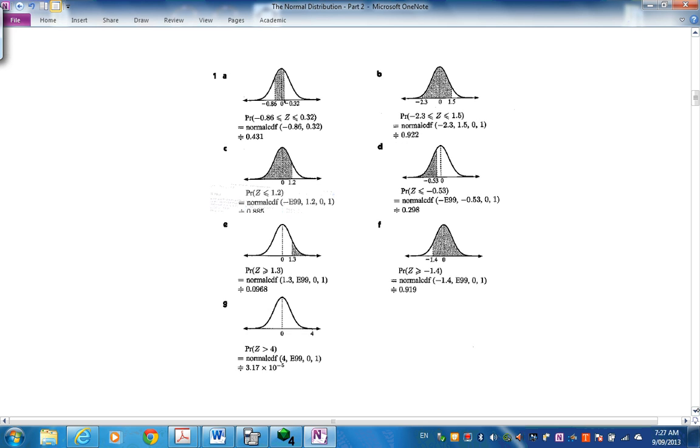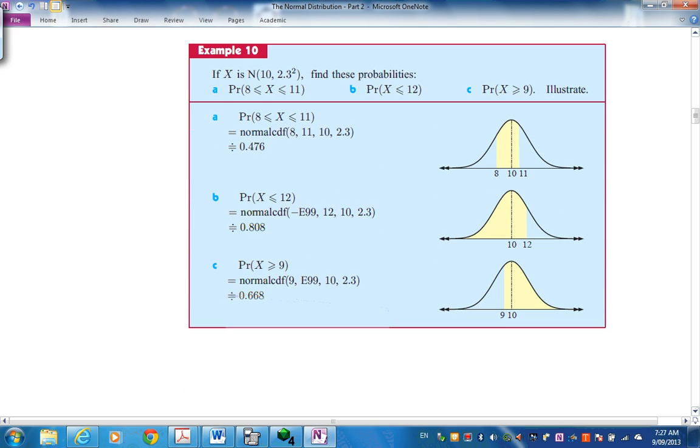Here's a different distribution. Mean of 10 standard deviation of 2.3. Remember, 2.3 squared is the variance. So find the probabilities between 8 and 11. Instead of this line, you can just say using technology. And you can put statements of the window in if you like, upper and lower, mu and sigma. Put that in, push execute and check that you're going to get this.